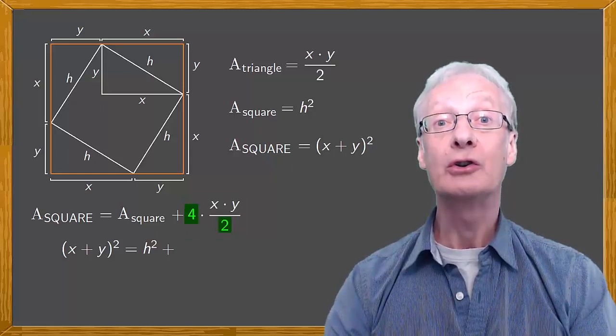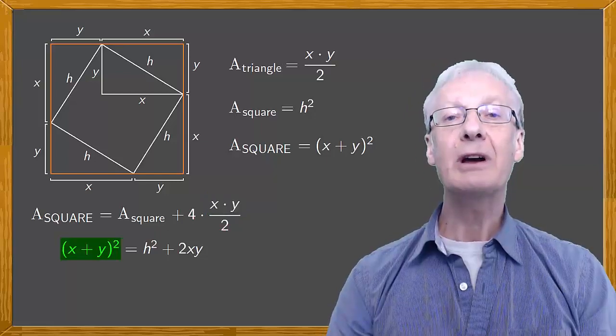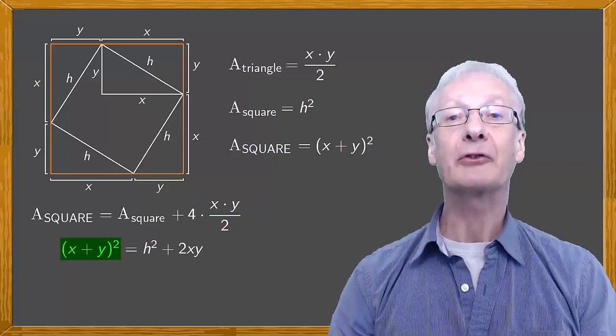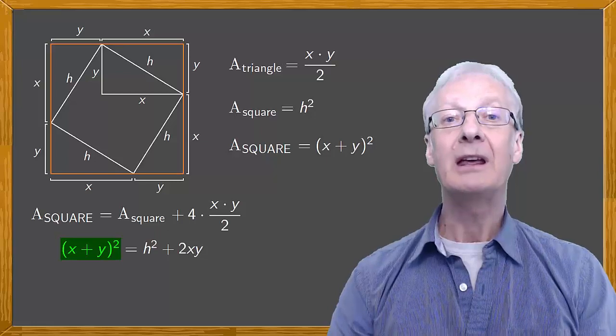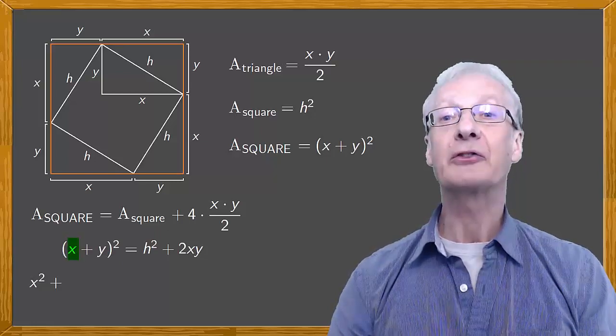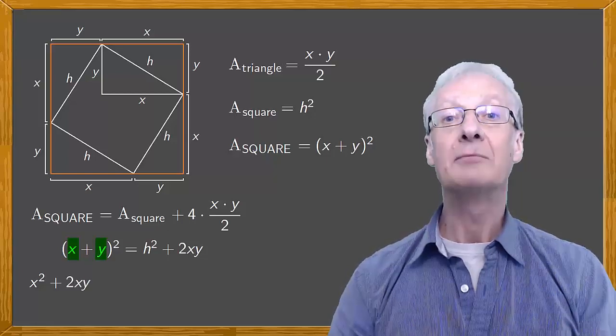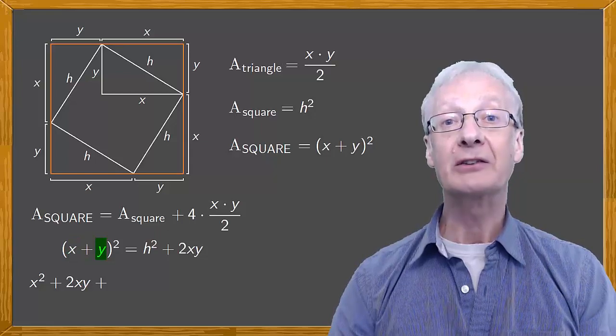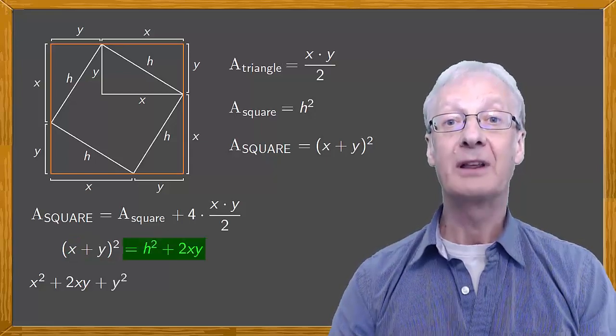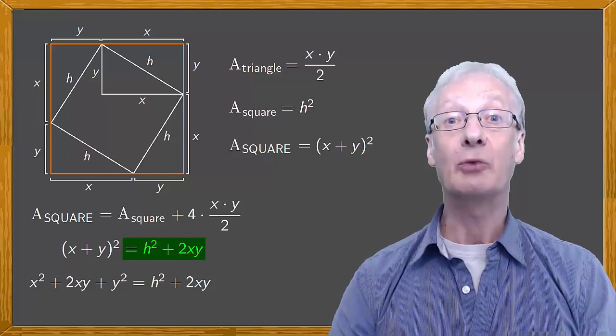The square of x plus y, the square of a sum, equals the square of the first term, x squared, plus twice the first term times the second, 2xy, plus the square of the second term, y squared. This equals h squared plus 2xy.